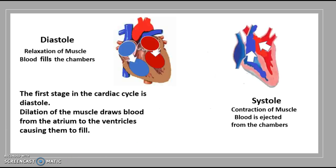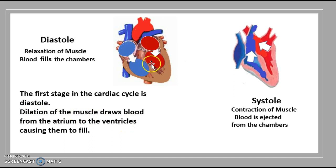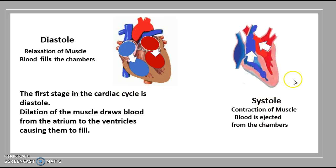To understand this disease, we have to understand how the heart pumps blood throughout the body. This is done in two different steps. The first stage in the cardiac cycle is diastole — the relaxation of muscle — and it fills blood throughout the chambers. The dilation of the muscle draws blood from the atrium to the ventricles, causing them to fill. The second stage is systole, the complete opposite of diastole: a contraction of the muscle where blood is ejected from the chamber.